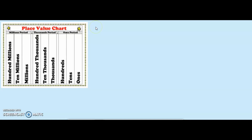Now let us take another number: 1, 8, 7, 6, 5, 4, 3, 2. I'm going to determine the place value and the value of the digits in this number. Remember, we must start inserting our numeral from the digit to the right. So my 2 is going to go into my 1s, 3 goes here, then 4, then 5, 6, 7, 8, and 1.